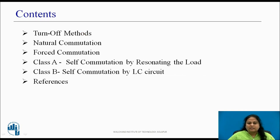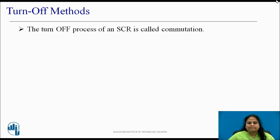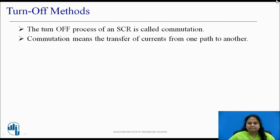These are the contents we will be covering in this session. In the previous session, we studied turn on and turn off mechanism of SCR. Turn off process of an SCR means bringing back the SCR from forward conducting state to forward blocking state. This turn off process of an SCR is called as commutation of SCR. Commutation is nothing but transferring the current from one part to another.